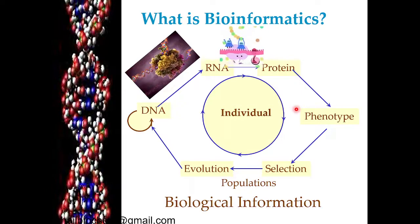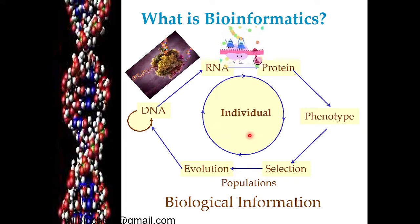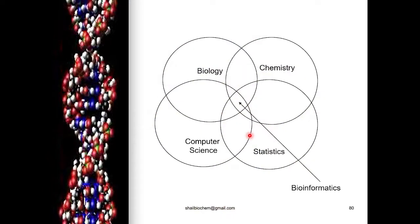We can gain biological information of any individual species. Bioinformatics is actually an interdisciplinary science comprising biology, chemistry, computer science and statistics.